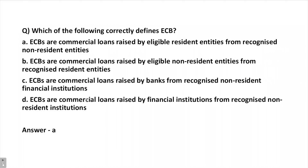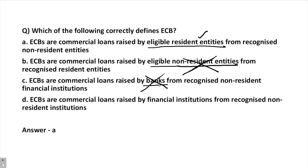Let's look at a practice question. Which of the following correctly defines external commercial borrowings? Option A: commercial loans raised by eligible resident entities — this is correct. Option B: raised by eligible non-resident entities — no, only resident entities in India raise the money. Option C: loans raised by banks only — no, corporations and companies can also raise money through ECB route. Option D: raised by financial institutions — this excludes certain classes of entities.